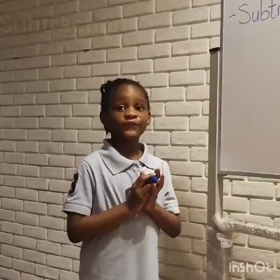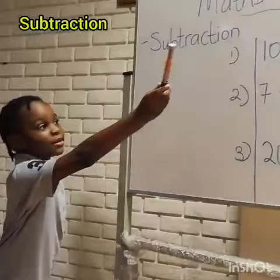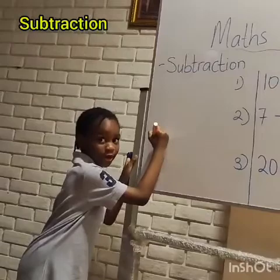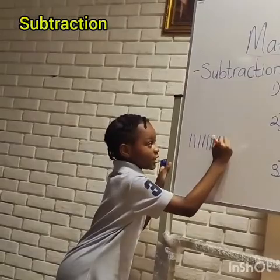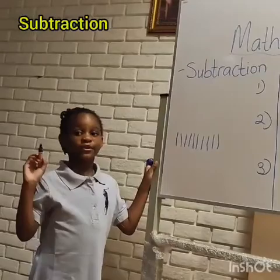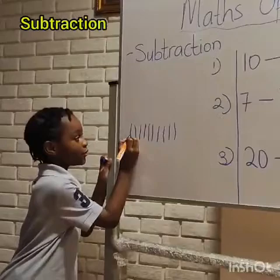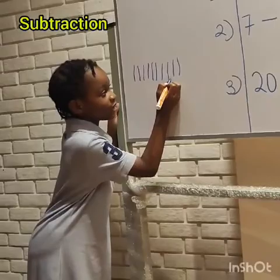So you can see ten minus seven. So we can write ten lines: one, two, three, four, five, six, seven, eight, nine, ten. It is ten, guys. Correct.